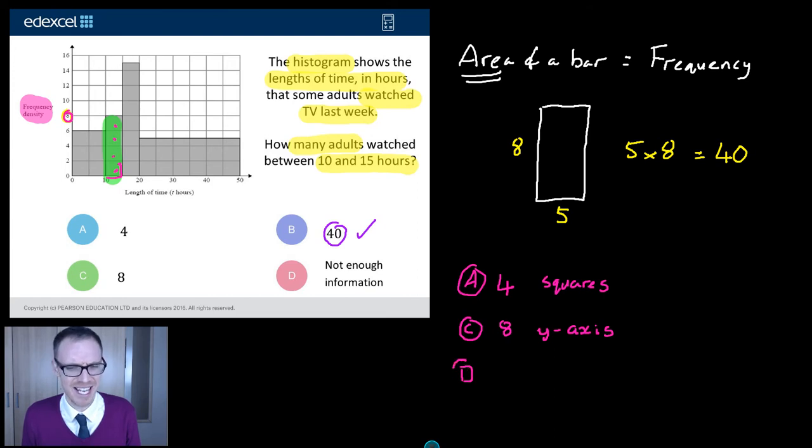What about D? D is an interesting one. Not enough information. Why would students think that? Well, I reckon students are muddling up pie charts and histograms, which seems a weird thing. They look nothing like each other. But when you've got a pie chart, it doesn't mention frequency on a pie chart. So you can't actually work out the frequency of any of the segments on a pie chart unless you've got some more information.